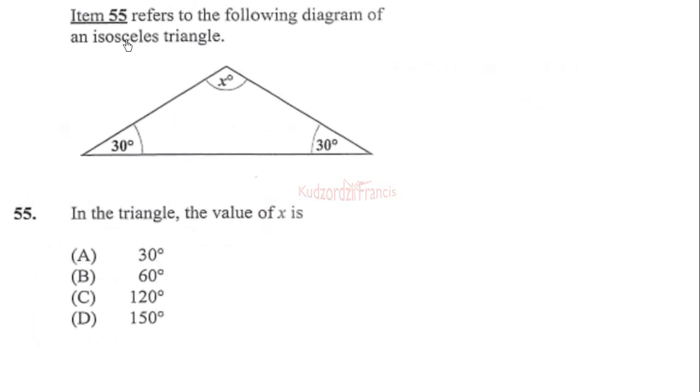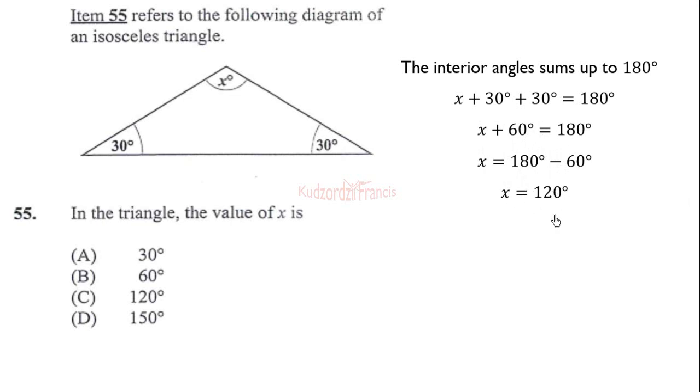Now let's talk about 55. Item 55 refers to the following diagram of an isosceles triangle. In the triangle, the value of x is? We know the sum of angles in a triangle gives us 180 degrees. So x plus 30 plus x plus 30 degrees equals 180. We subtract 60 from both sides to get 2x equals 120 degrees, so x equals 120 degrees. The answer is C.